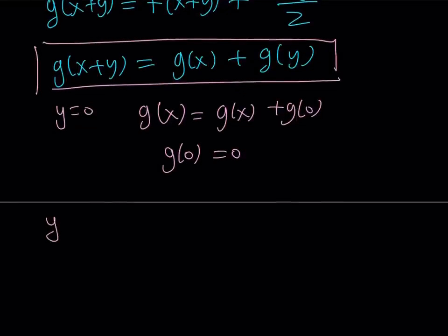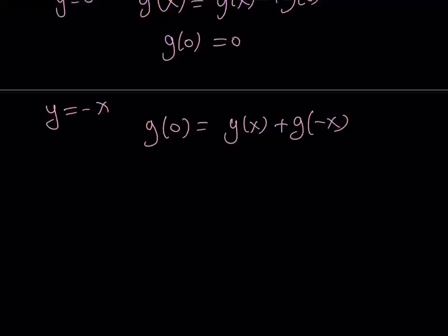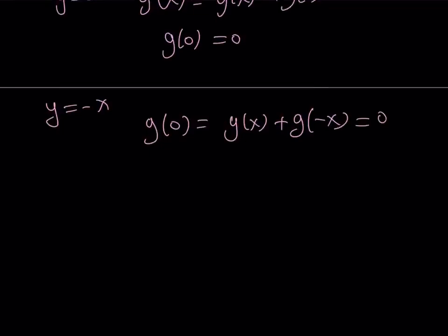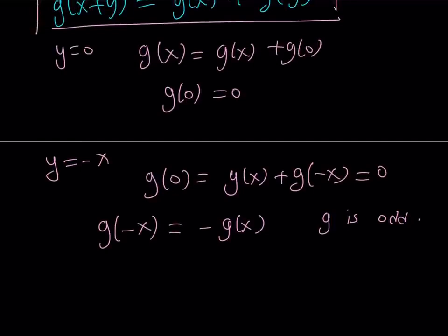The second observation I want you to make is replacing y with -x, I get g(x-x), which is 0, equals g(x) + g(-x). And since g(0) is equal to 0, we can set them equal to 0. From here, we get g(-x) = -g(x). This tells you that g is an odd function, because that's what odd functions do. So this quick observation shows us that g is odd, g(0) = 0.